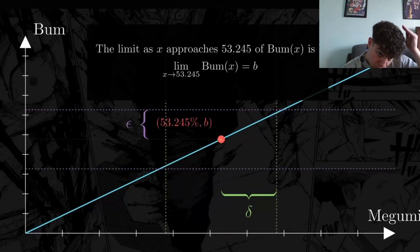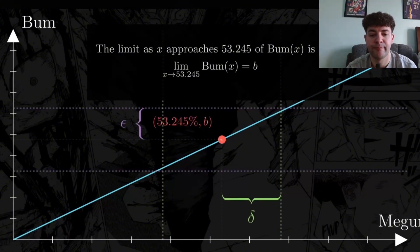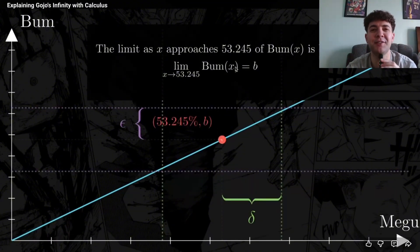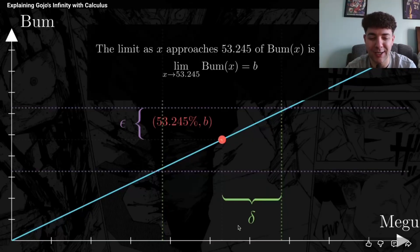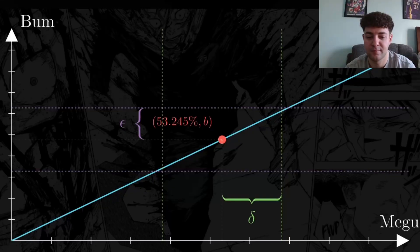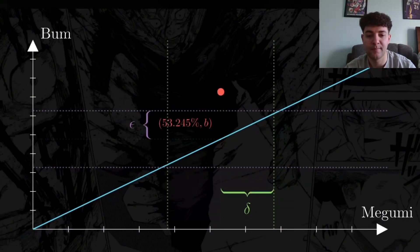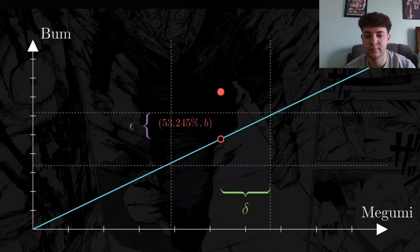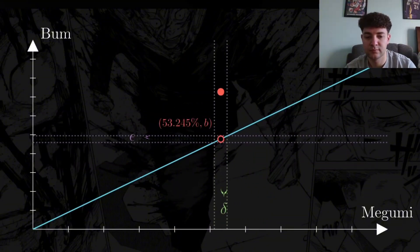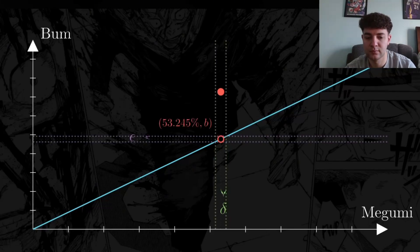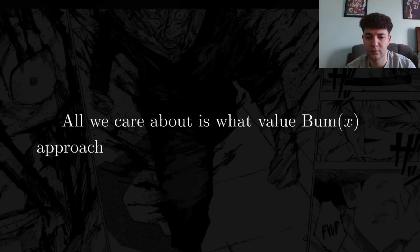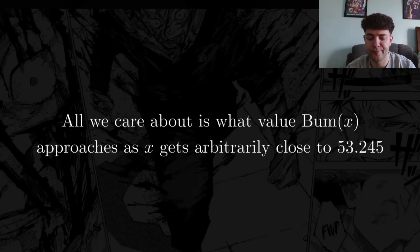We call this a limit because for some arbitrary margin of accuracy on the bum axis — we'll call the error epsilon — I can always choose some range, delta, on the Megumi axis such that the difference between bum(x) and our value b is within the purple lines. But what if that relationship is only true for most points, not our specific point? Then no matter how far we zoom in, we'll always be wrong about my bum value. What matters is not the actual value of bum(53.245), but what value bum(x) approaches as x gets arbitrarily close to 53.245. This is the concept of a limit.